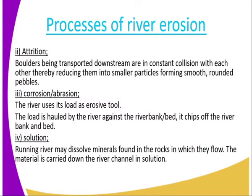The next one is attrition. With all the boulders being transported downstream in constant collision with each other, they are reduced into smaller particles. That collision causes the boulders to grind against each other, resulting in the smoothening and rounding of pebbles. This process reduces their sizes, and that is what we call attrition.